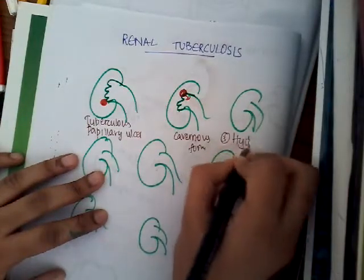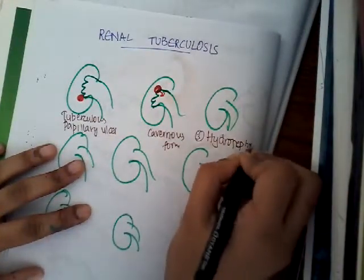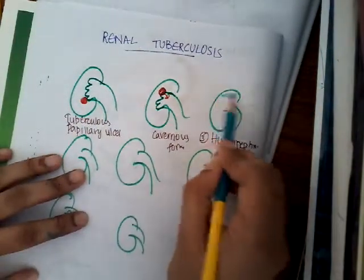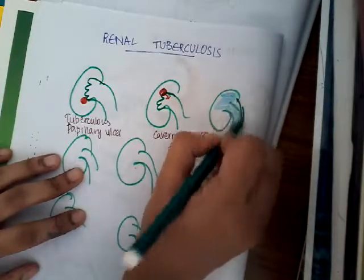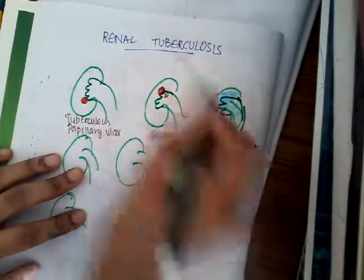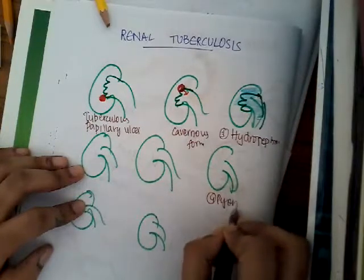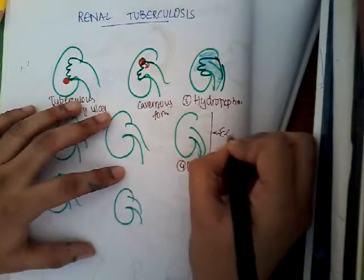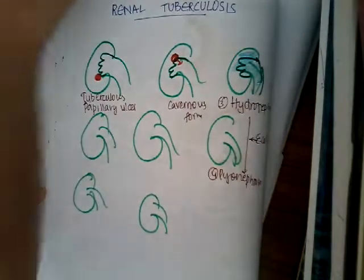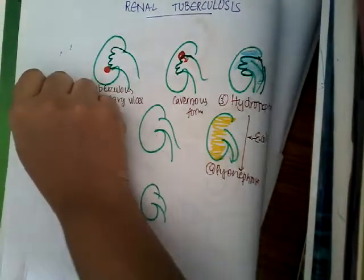The third form is hydronephrosis. Because of the ulcer and related changes, there is dilatation of the renal pelvis mainly. Sometimes this can get secondarily infected by E. coli or other organisms, leading to pyonephrosis. So when this hydronephrosis is again infected, it causes pyonephrosis.